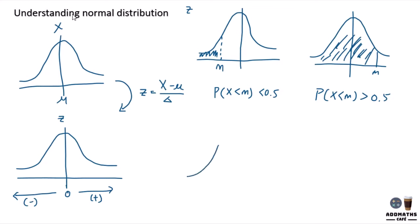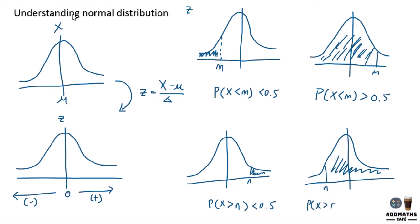Same goes to this. Let's say I'm finding n which is on the right side. So it will be P(x more than n) and your area will be less than 0.5. And if it is on the left side, your n is on the left side and you are finding this area, it means that P(x more than n) and your area will be more than 0.5. So this thing is a basic knowledge for normal distribution and you must always understand this graph.